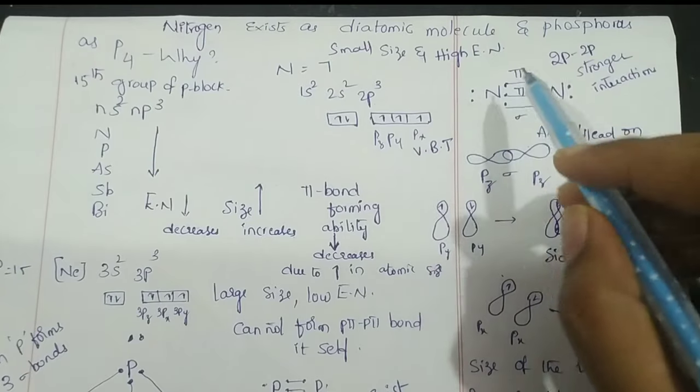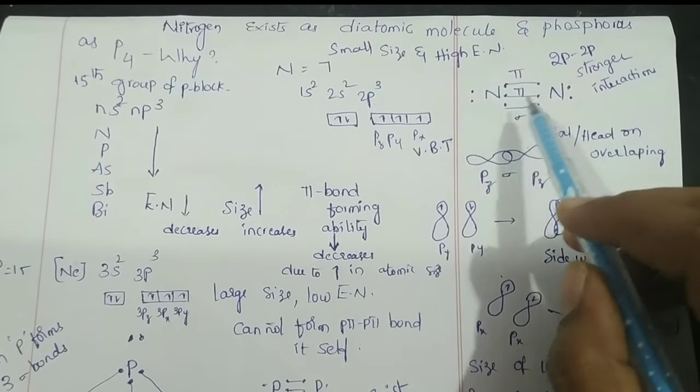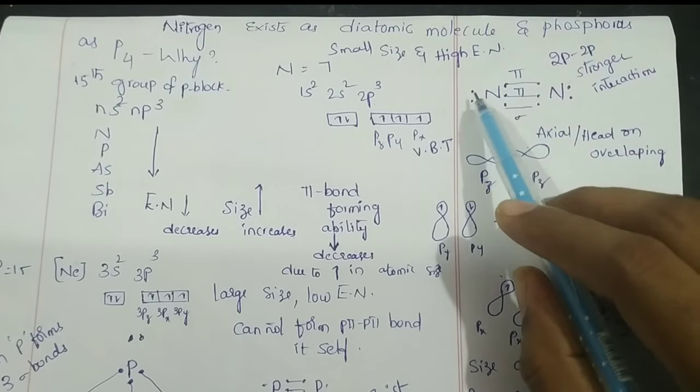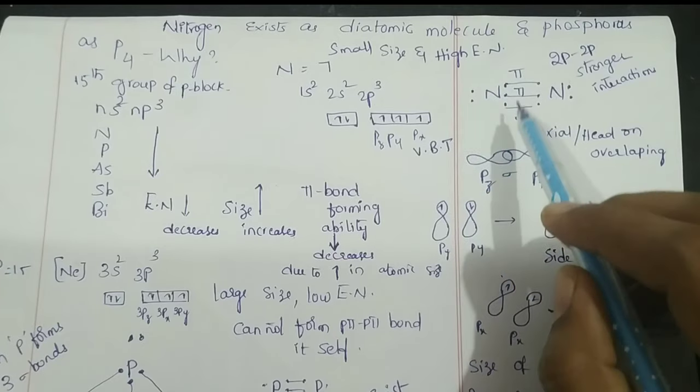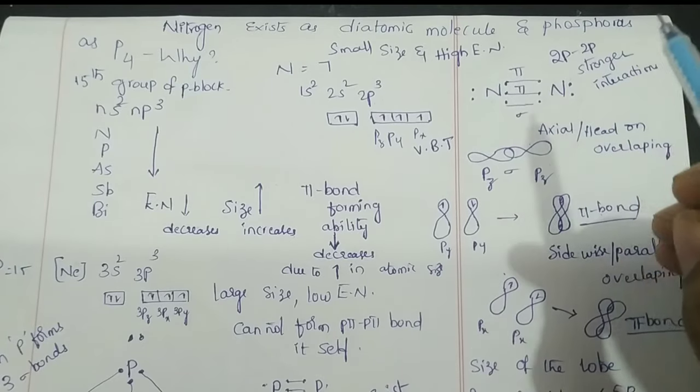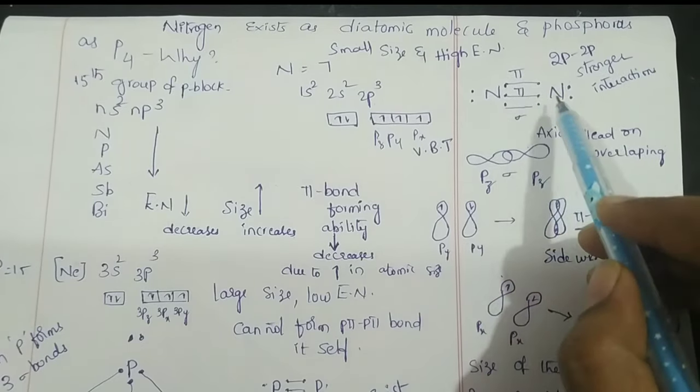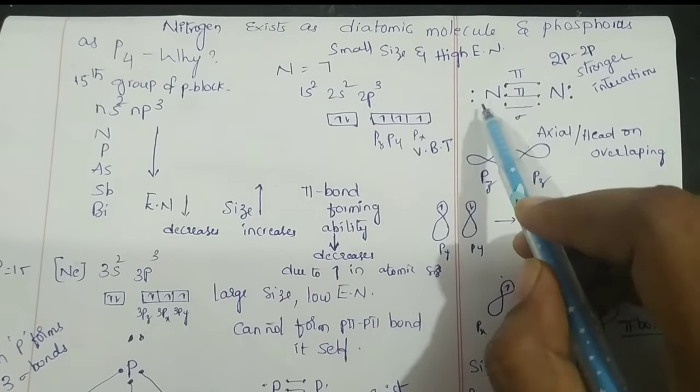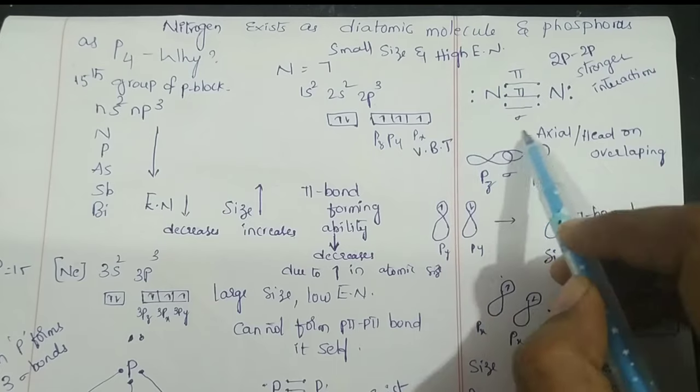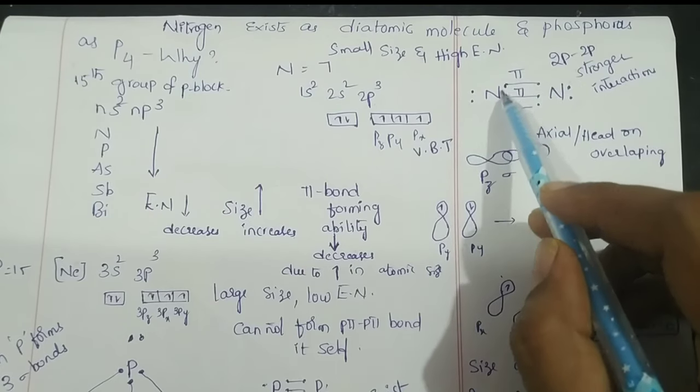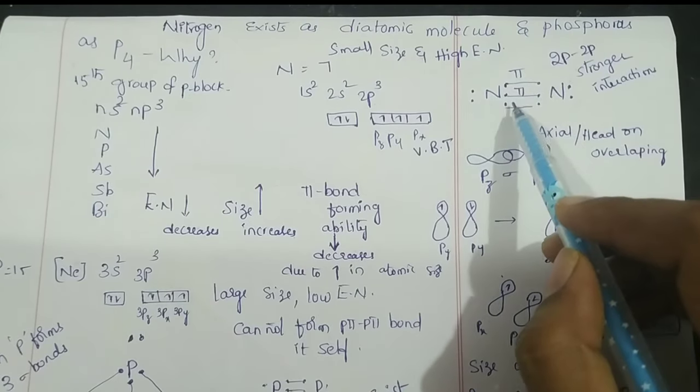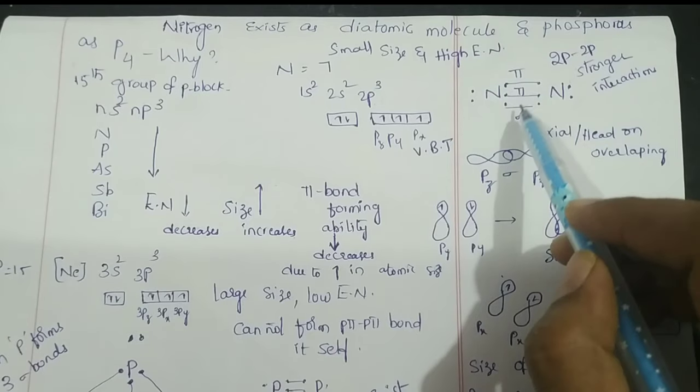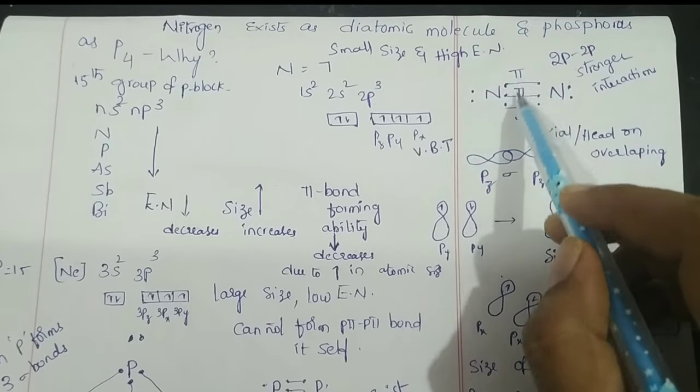In nitrogen bonding, nitrogen has 5 electrons in the valence shell. To complete its octet, it forms 3 bonds with another nitrogen atom. Both nitrogen atoms have 8 electrons, with one sigma bond and two pi bonds formed.